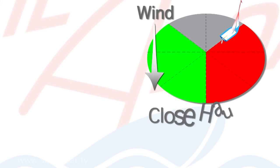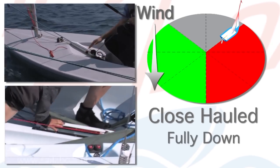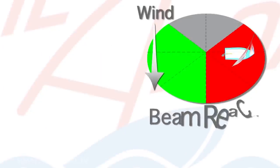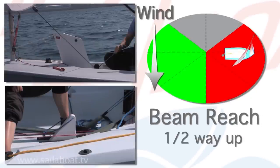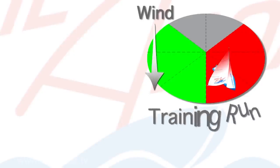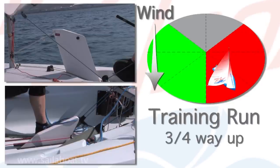Starting close hauled, the centre board should be fully down. On a beam reach, it should be about half way up. And on a training run, about three quarters up. So let's recap the six essentials.